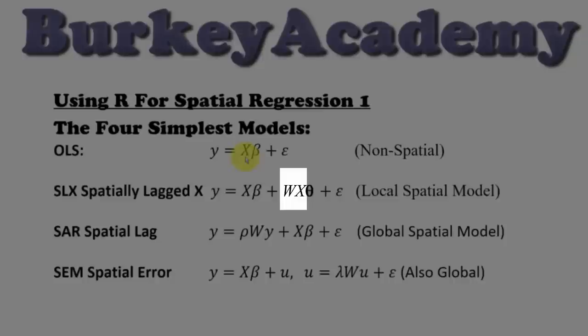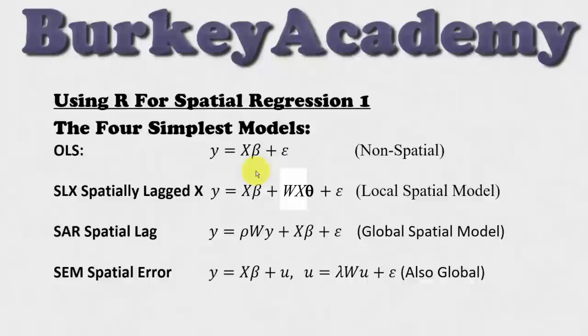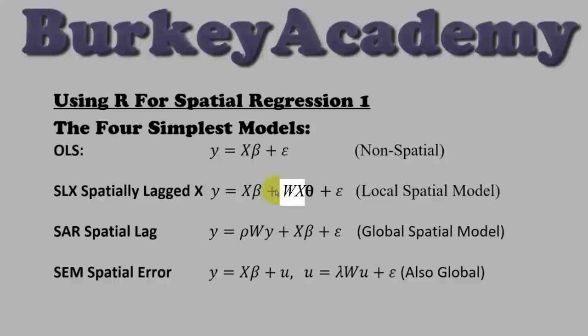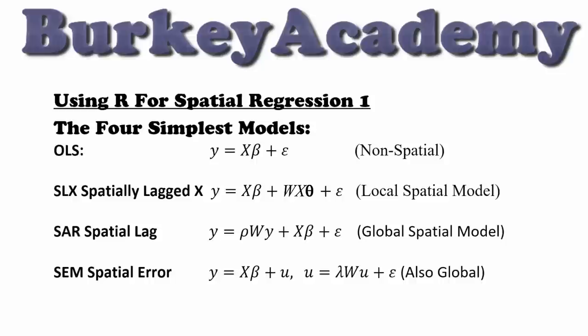For example, if we were explaining crime rates as our y, our x's might involve things like income, education, and unemployment rates. In the spatially lagged x model, we also include the values of our neighboring regions' education, income, and unemployment rates. The idea being that neighboring unemployment might cause people to come here and commit crimes in our region.